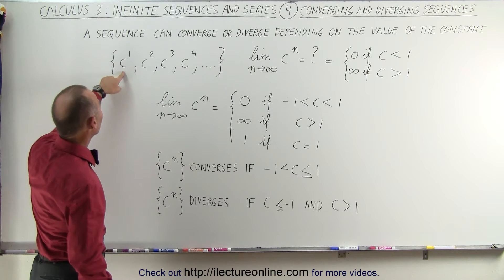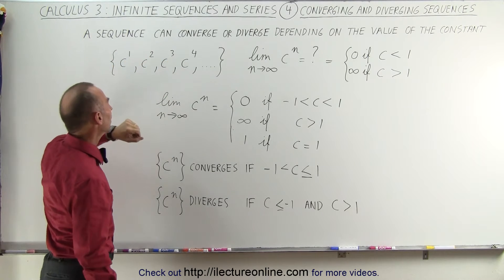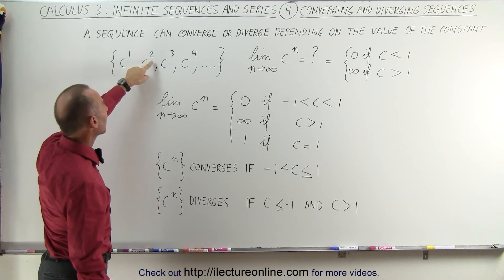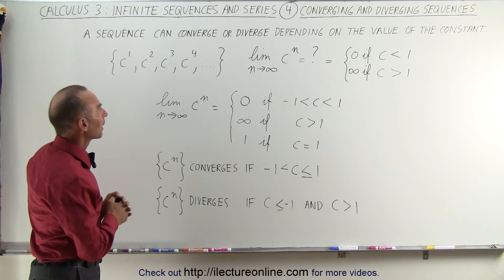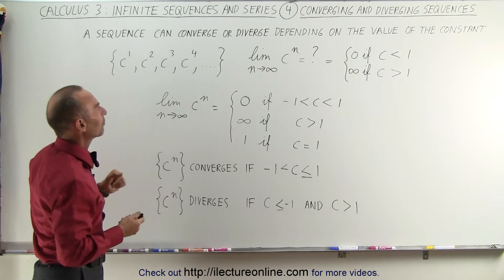In this example we have a constant raised to an exponent where the exponent increases by 1. So in this case we have c to the n as n goes from 1 to infinity and the question is does that particular sequence converge or diverge?